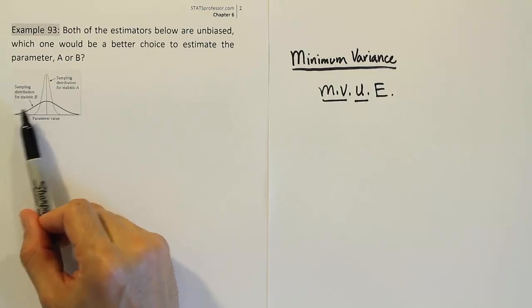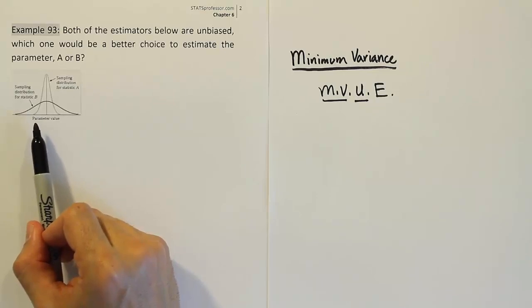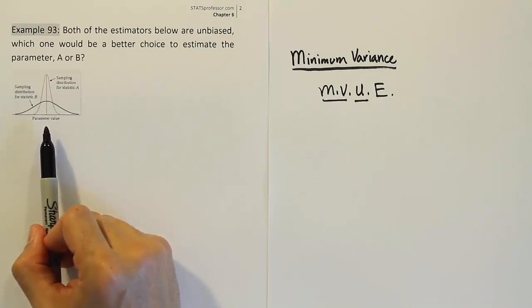Whereas with the sampling distribution for B, you can see that it's far more likely, for example, that it gets this far out, which would be almost impossible on the A curve. So, generally speaking, A is a more accurate estimator. On average, it's equal to the target. And when it misses, it doesn't miss by much.